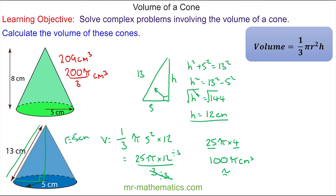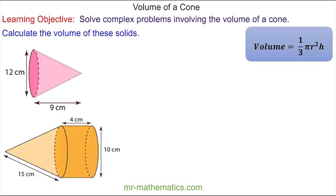As a decimal, this is approximately 314 cm³ to 3 significant figures. Now let's try some more questions — do you want to work out the volume of the pink cone? Pause the video and resume when you're ready. The perpendicular height is 9cm and the radius is half the diameter, so that's 6cm.